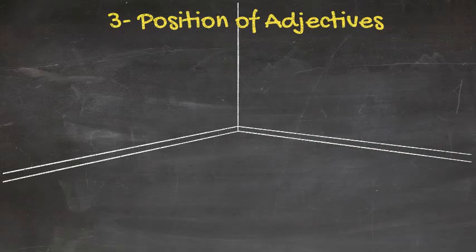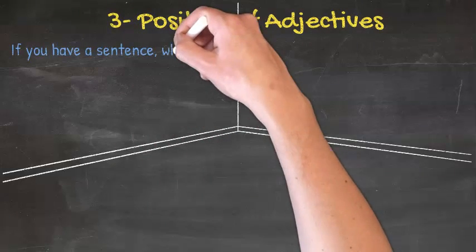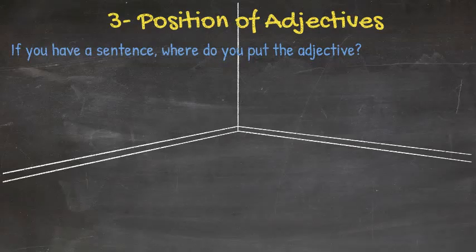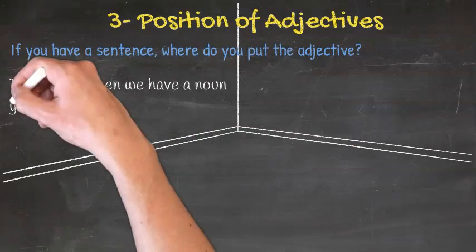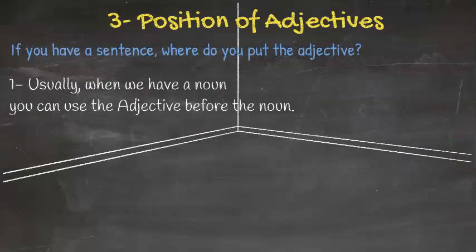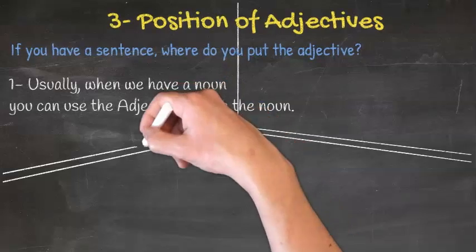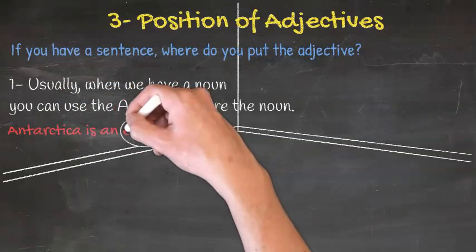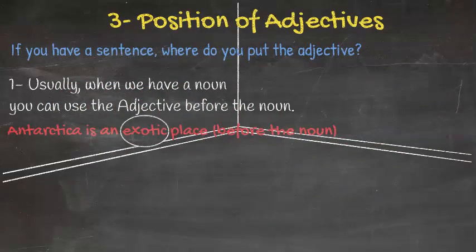The third part of our lesson today is position of adjectives. In a sentence, where do you put the adjective? First, usually when we have a noun, you can use the adjective before the noun. For example, Antarctica is an exotic place. The adjective came before the noun.